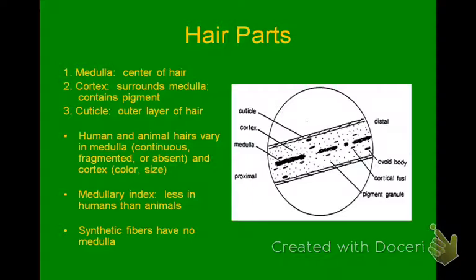There are three main parts to a strand of hair. The medulla is the center of the hair — more on that in a minute. The cortex is the open space in the hair, and that's where the pigment is found. And then the cuticle is the outer layer of hair — we'll go back to that in a couple of slides.